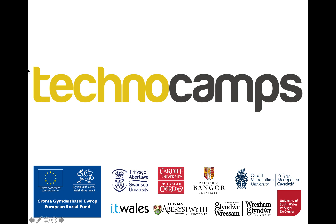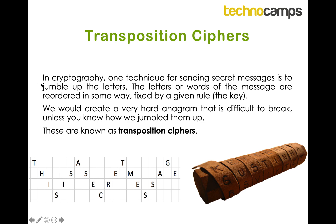Welcome to the next part of the cryptography activity pack. If you've watched the last video on the rail fence cipher you would have covered transposition ciphers. If not, don't worry. A transposition cipher is where instead of changing letters to other letters or symbols, we just want to jumble up the letters in our message, reordering them using some kind of rule. This creates a really hard anagram that is difficult to crack — the only way to figure out the message is if you know how the letters were jumbled up.